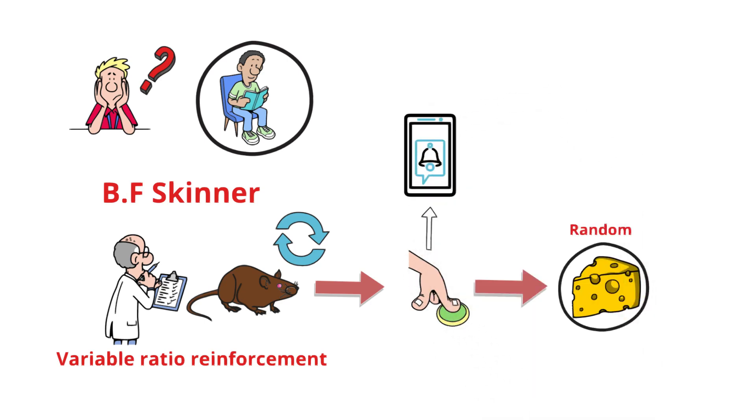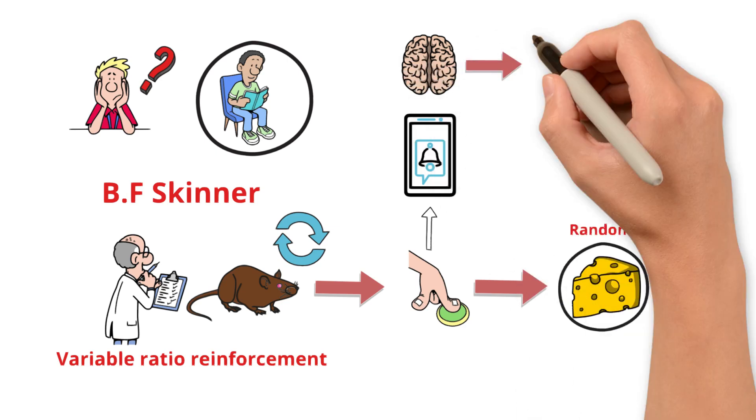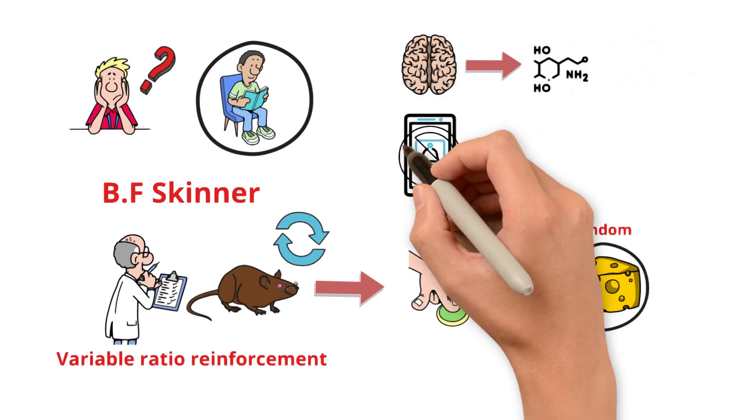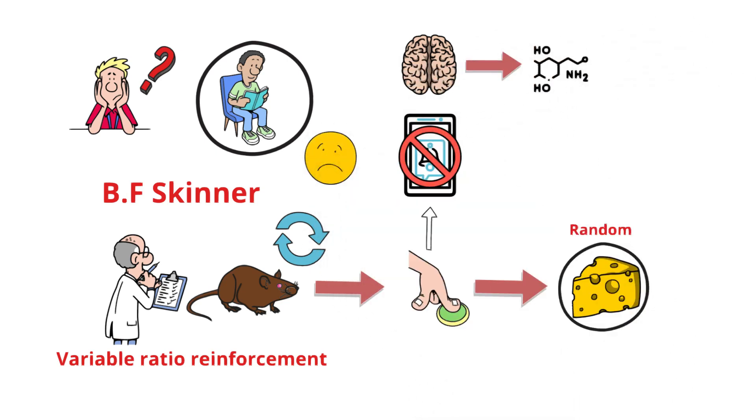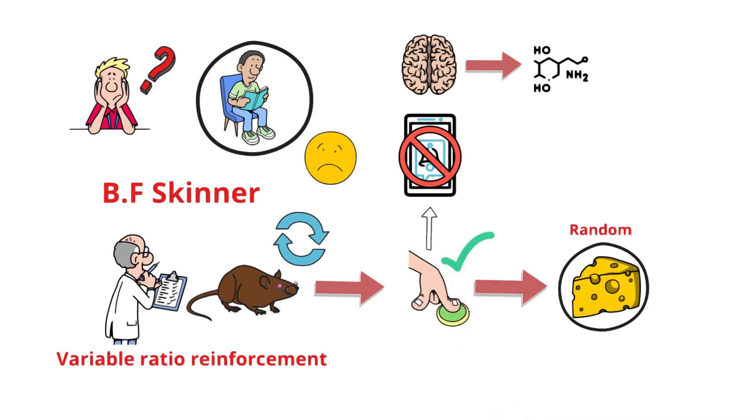Now, picture this. That lever is your phone. Every time you check your notifications, you're pressing a lever, and your brain gets a treat in the form of dopamine. But what happens when you don't get a treat? You feel disappointed. So you press the lever again, and again. Sound familiar?